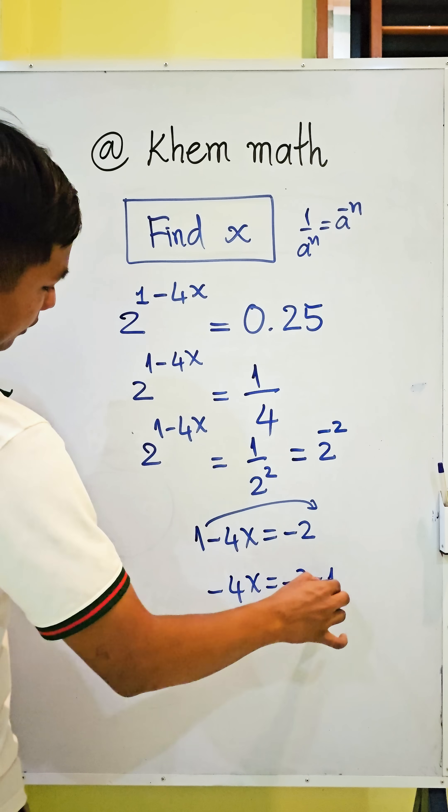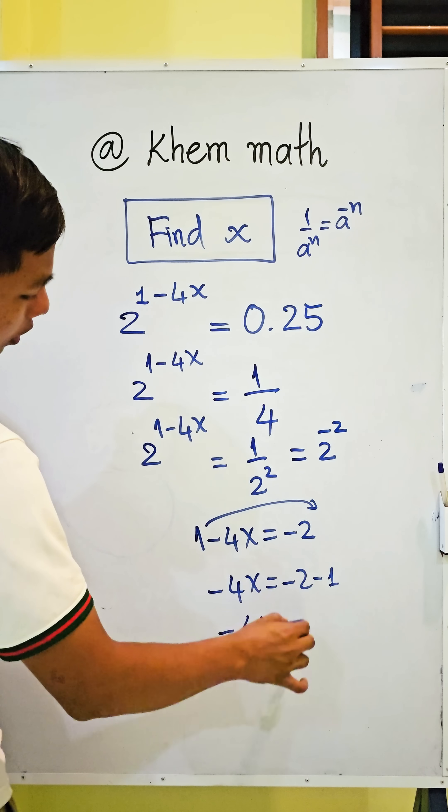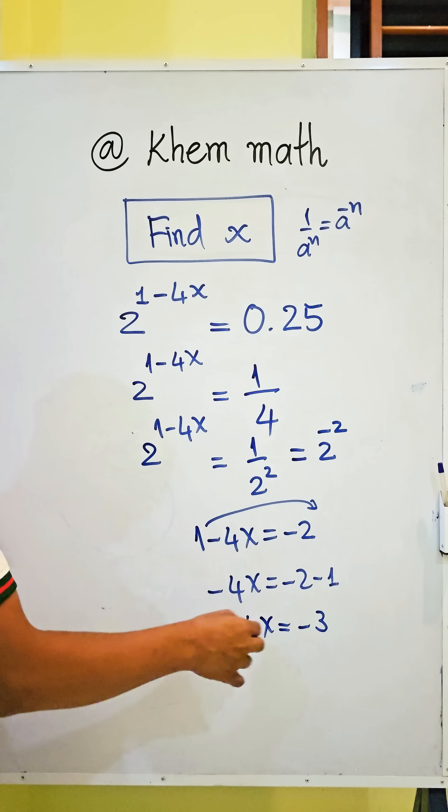This gives us negative 4x equals negative 3. We divide both sides of the equation by negative 4.